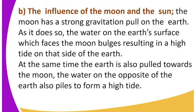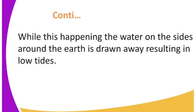The second cause is the influence of the moon and the sun. The moon has a strong gravitational pull on the earth. As it does so, the water on the earth's surface which faces the moon bulges, resulting in a high tide on that side of the earth. At the same time, the earth is also pulled towards the moon. The water on the opposite side of the earth also piles to form a high tide. While this is happening, the water on the sides around the earth is drawn away, resulting in low tides.